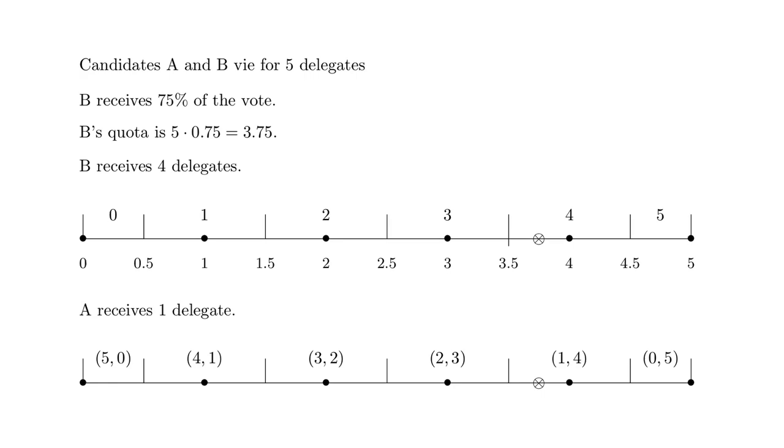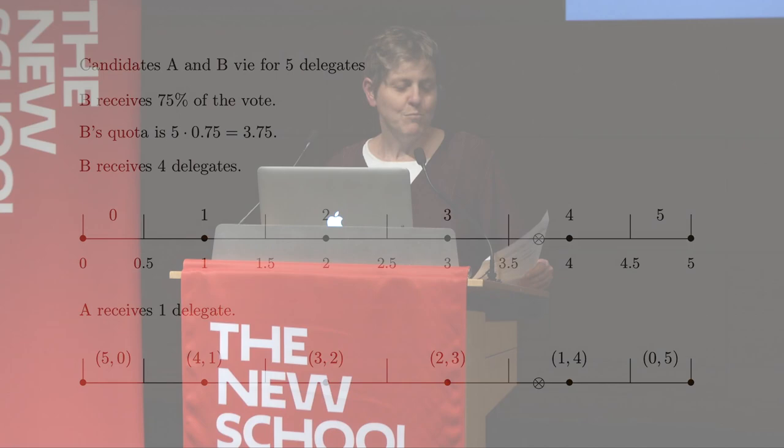At the bottom, you see the results for both candidates. Notice as you move to the right, B gets more delegates. And as you move to the left, A gets more.